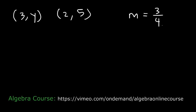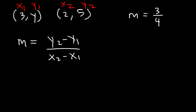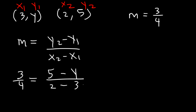Consider this problem. Let's say the first point is 3 comma y and the second point is 2 comma 5, and you're given the slope, which is 3/4. What is the value of y? To find it, let's rewrite the formula: m equals y2 minus y1 divided by x2 minus x1. m is 3/4, y2 is 5, y1 is y (what we're looking for), x2 is 2, and x1 is 3.